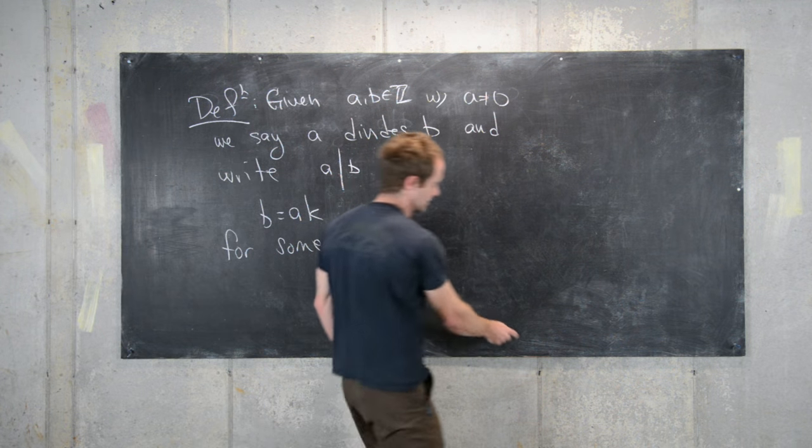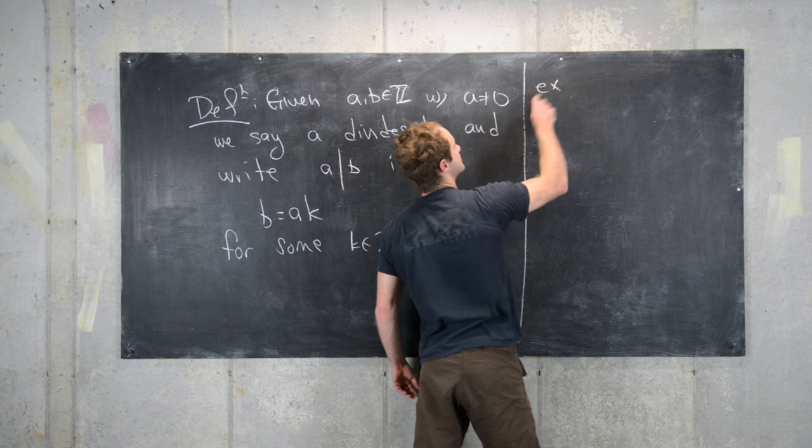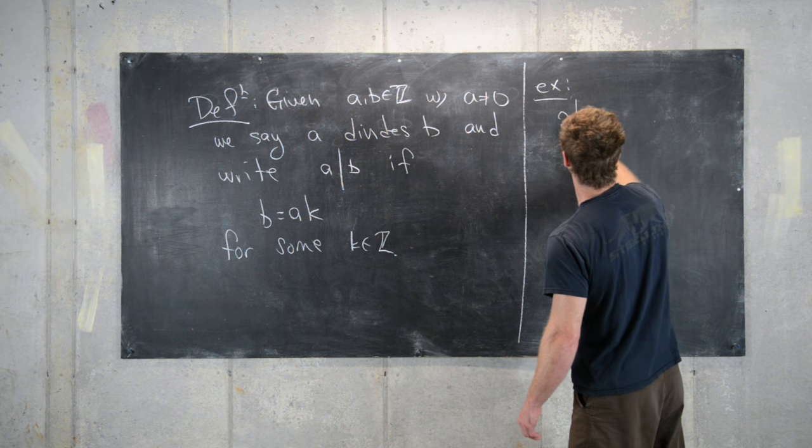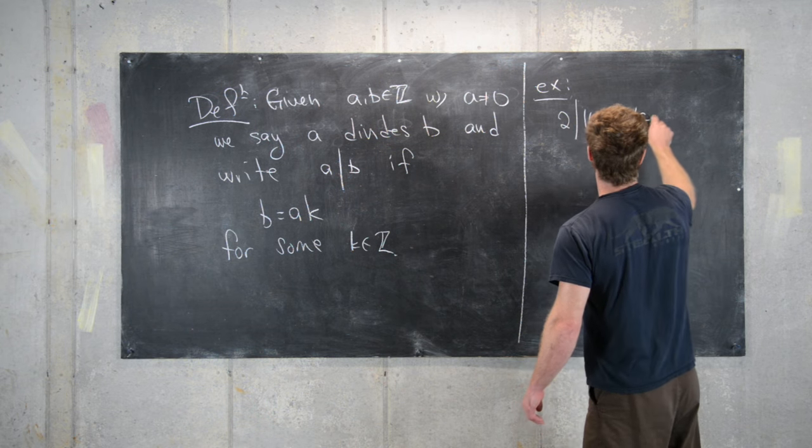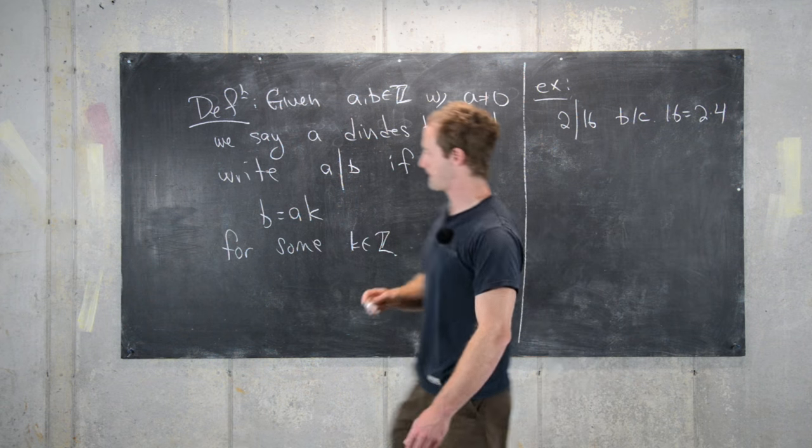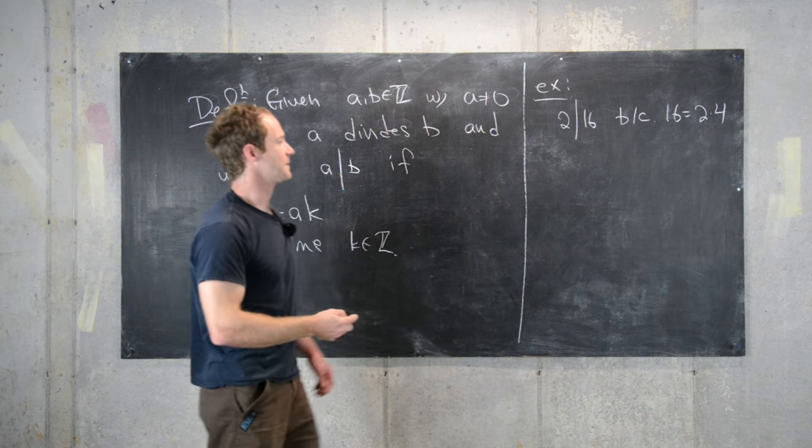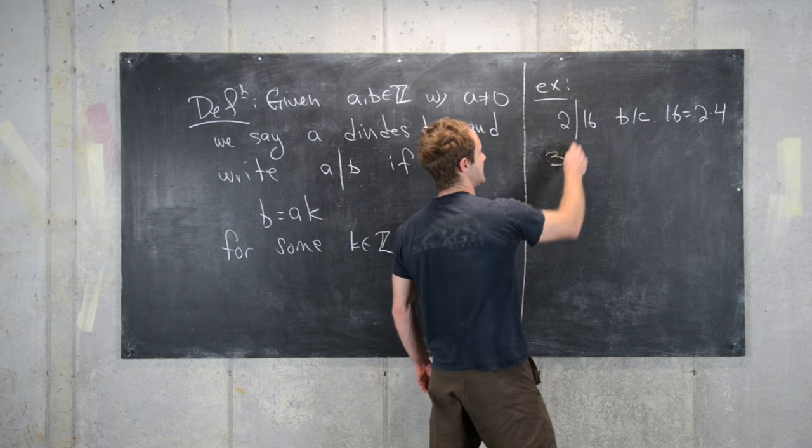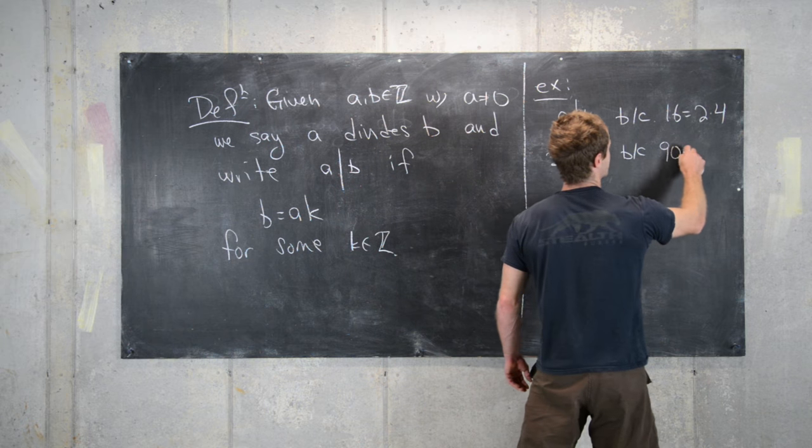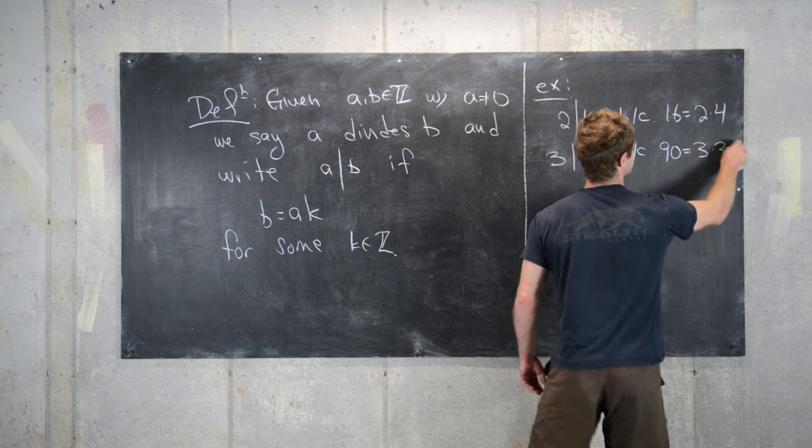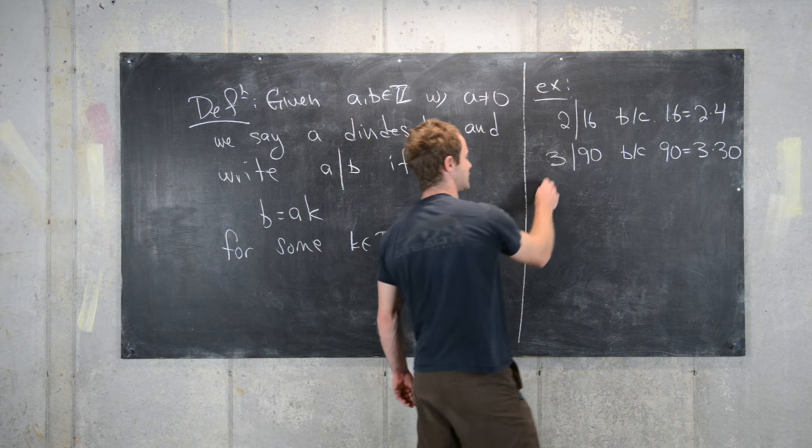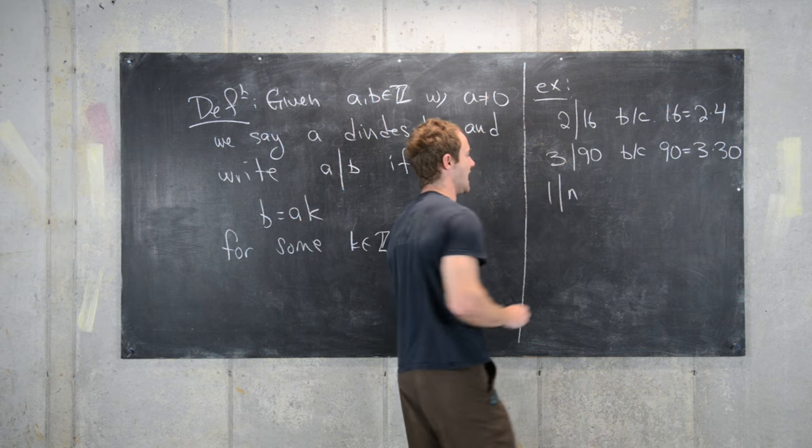Let's look at some examples. We could say that 2 divides 16 because 16 equals 2 times 4. We could say 3 divides 90 because 90 equals 3 times 30. Notice 1 divides any integer n because n equals 1 times n.